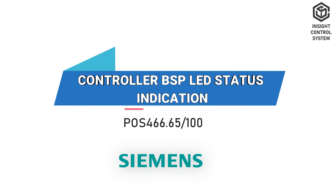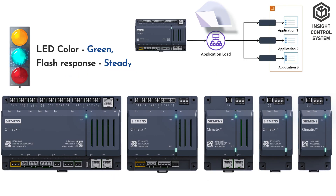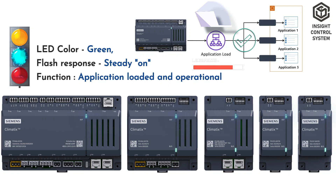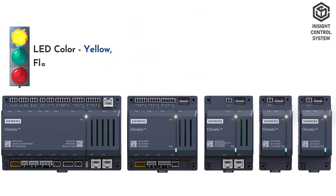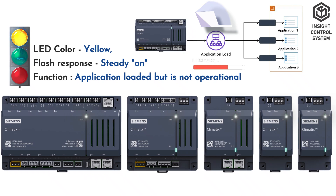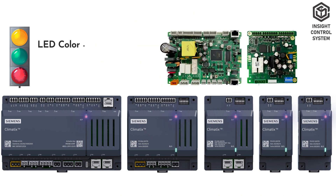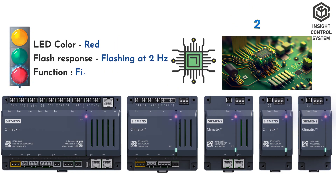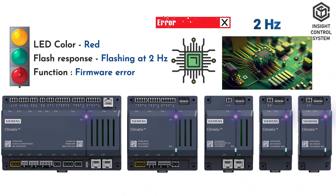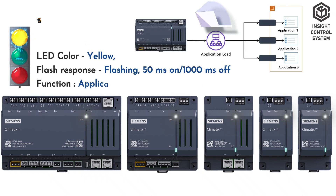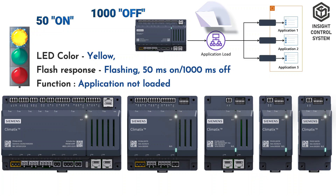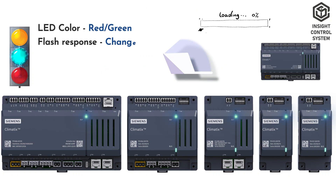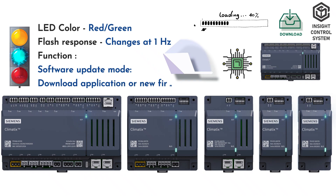Controller BSP LED status indication: Green steady on indicates the application is loaded and operational. Yellow steady on indicates the application is loaded but not active. Red steady on indicates a hardware fault. Flashing red at 2 Hz indicates a firmware error. Yellow flashing 50 ms on / 1000 ms off means the application has not loaded. Flashing red or green at 1 Hz signifies software update mode — downloading application or new firmware.